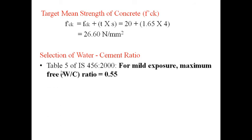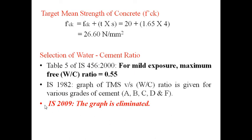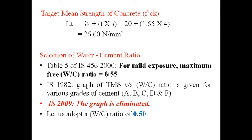Selection of water-cement ratio: Table 5 of IS 456:2000 states that for mild exposure, the maximum free water-cement ratio is 0.55. Importantly, IS 10262:1982 provides a graph of target mean strength vs water-cement ratio for various cement grades (A to F), but IS 10262:2009 has completely eliminated this graph. Based on manual judgment, we adopt a water-cement ratio of 0.5, the same as used for the 1982 code design.